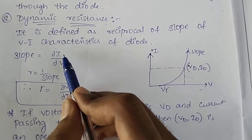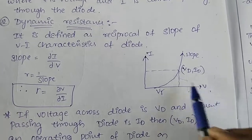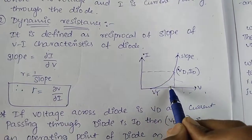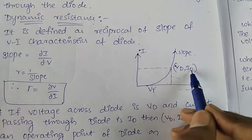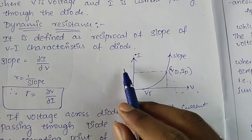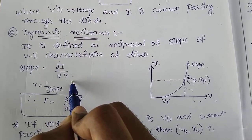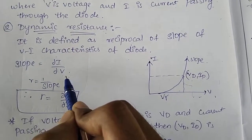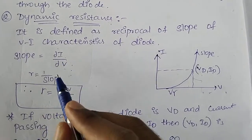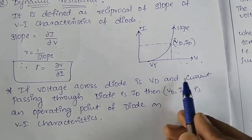On the V-I characteristics, the x-axis has voltage and the y-axis has current. Differentiating current with respect to voltage gives the slope as dI/dV. Since resistance equals 1 by slope, the dynamic resistance R equals dV/dI.